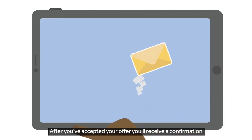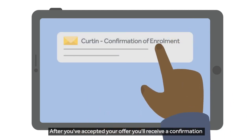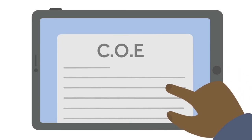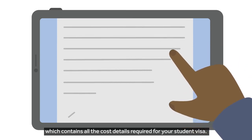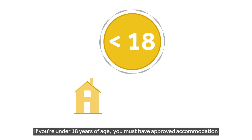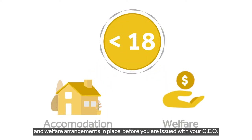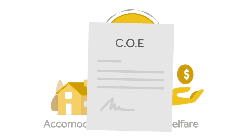After you've accepted your offer, you'll receive a Confirmation of Enrolment Letter, or COE, which contains all the course details required for your student visa. If you're under 18 years of age, you must have approved accommodation and welfare arrangements in place before you are issued with your COE.